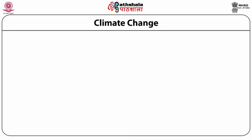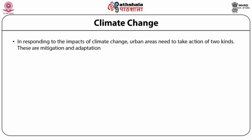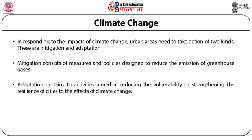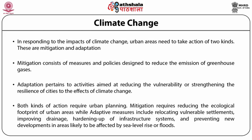The first such issue is that of climate change. In responding to the impacts of climate change, urban areas need to take action of two kinds: mitigation and adaptation. Mitigation consists of measures and policies designed to reduce the emission of greenhouse gases. Adaptation pertains to activities aimed at reducing the vulnerability or strengthening the resilience of cities to the effects of climate change. Both kinds of action require urban planning.